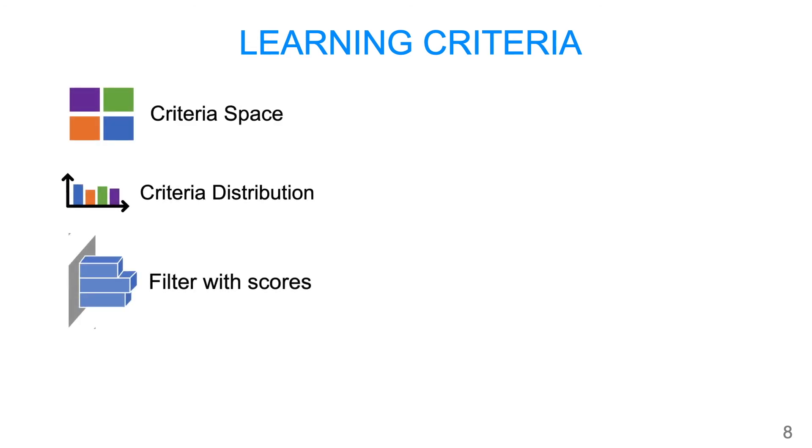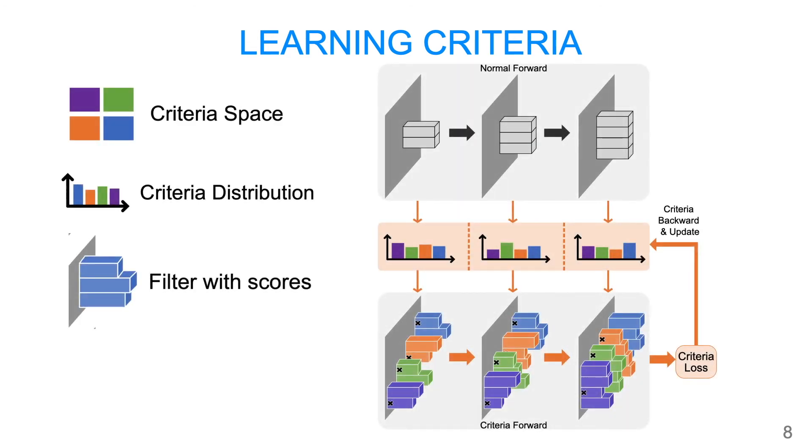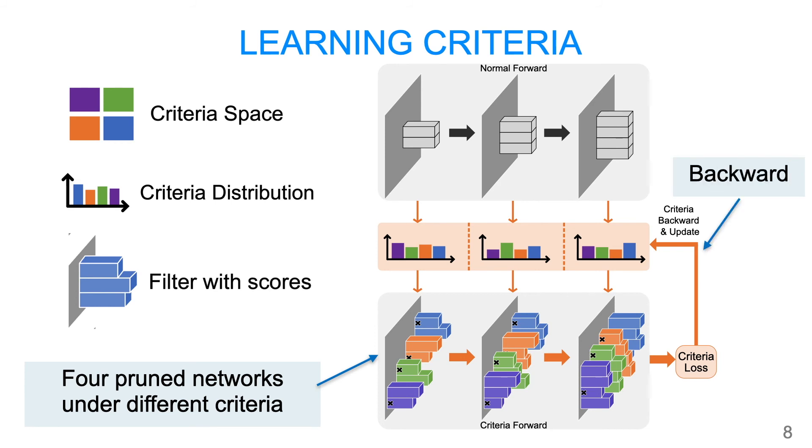Suppose we have four criteria for pruning. We give every criteria a differentiable possibility, so we can consider four pruned networks under different criteria at the same time, and backpropagate the gradient to update the possibilities. Please read our paper for more details.